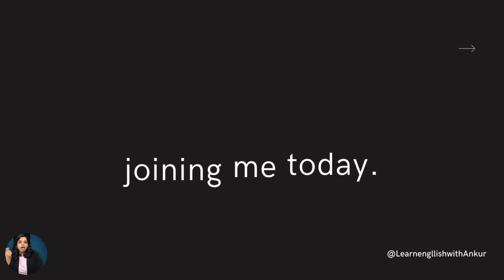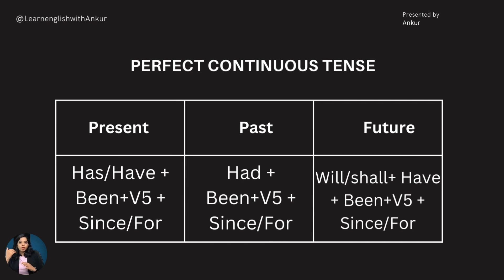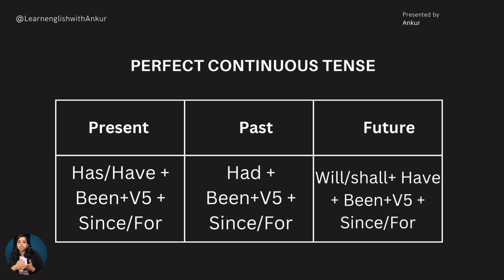We will understand three scenarios under perfect continuous tense. In present tense, the formula is: has or have plus been plus verb's fifth form — which is the first form plus -ing — plus since or for.